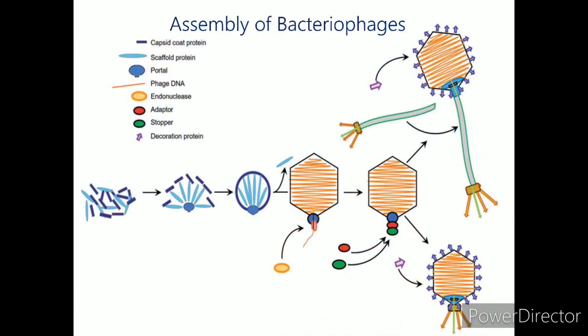Assembly of bacteriophages: Multiple copies of the capsid-scaffold complex bind to the portal protein to form the procapsid. Then the scaffold proteins are ejected and DNA is packed into the procapsid, which expands to the size of the mature capsid. The head completion proteins, the stopper and the adapter, are bound to the portal complex, preventing DNA leakage. Next, decoration proteins bind to the capsid, and the tail, assembled separately after DNA packaging, is attached. Thus the final infectious phage is produced. The pre-assembled tail attaches in myoviridae and siphoviridae, while in podoviridae, the tail assembles at the stopper.